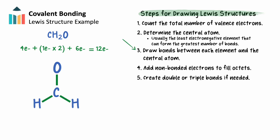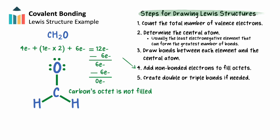We'll now connect the oxygen and two hydrogens to the central carbon with single bonds. The electrons used in these three bonds leaves us with six valence electrons, which we'll use to fill octets. At this point, hydrogen has attained stability, whereas oxygen needs an additional six electrons. We'll add our remaining valence electrons to oxygen to fill its octet. Our central carbon atom is in need of two more electrons to fill its octet — right now it only has six, coming from its three bonds.